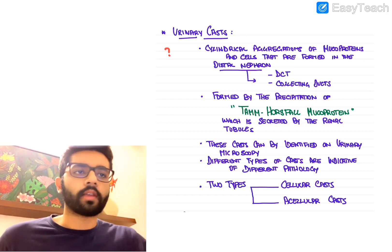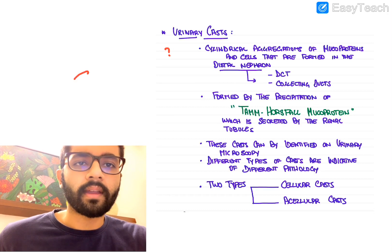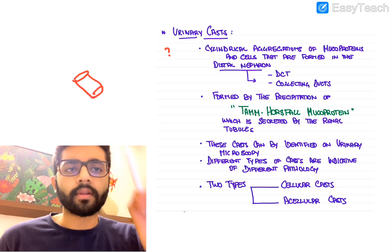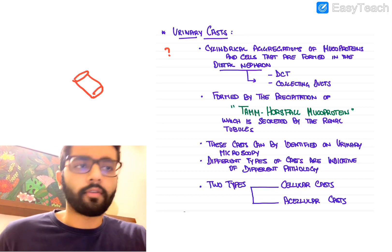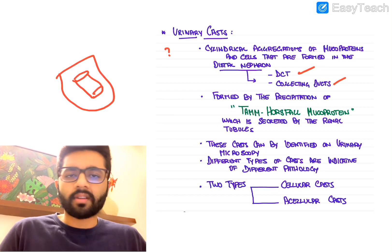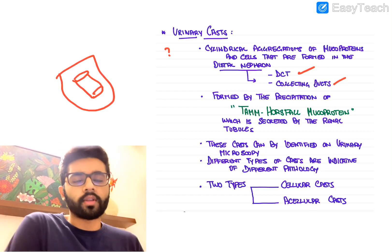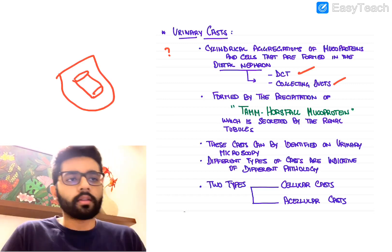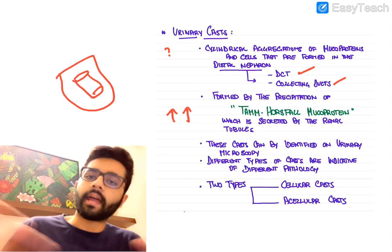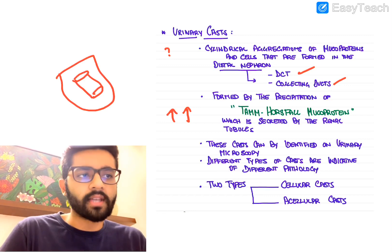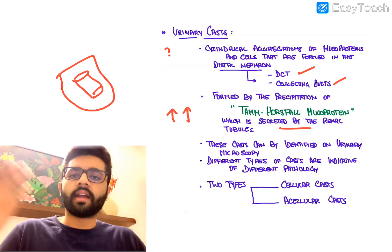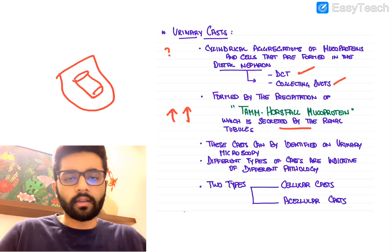So what are urinary casts? Urinary casts are cylindrical aggregations of mucoproteins formed in the distal nephron — that is, the distal convoluted tubule and collecting ducts. They are formed due to precipitation of the Tamm-Horsfall mucoprotein. These Tamm-Horsfall proteins are normally secreted by the renal tubules and are the most excreted protein in the urine physiologically.